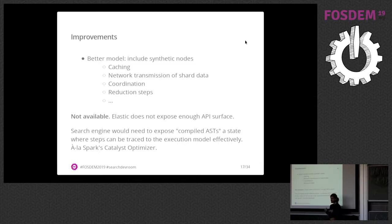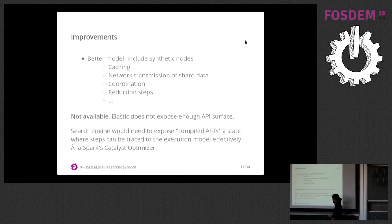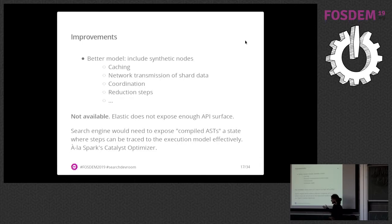If we wanted a better cost analysis, we would need some way to expose a better cost model so that we could incorporate the optimizations Elasticsearch performs into our model. This is ready to be implemented but we don't know how to do that yet. This could be somewhat like how the Spark Catalyst optimizer works with Spark SQL, where from a query you get other sets of queries.